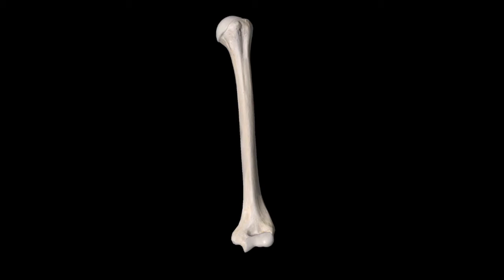Starting off with the humerus. On the proximal most part of the humerus we have the head of the humerus — this kind of roundish portion. Just distal to the head of the humerus we have this narrowing, which is going to be called the anatomical neck of the humerus.